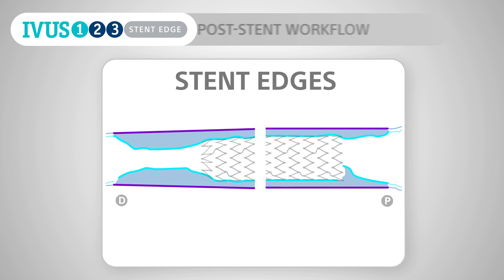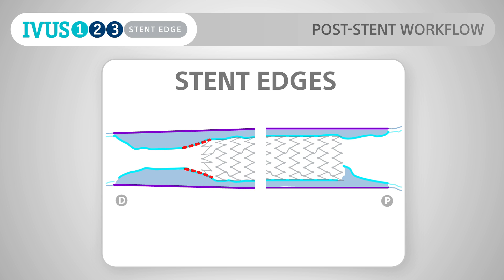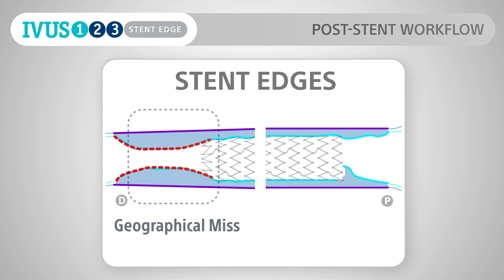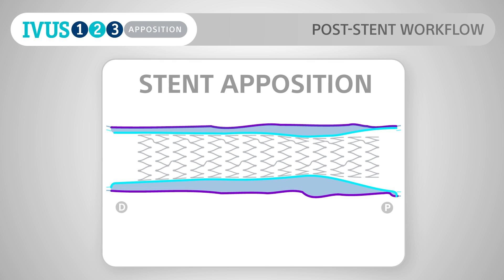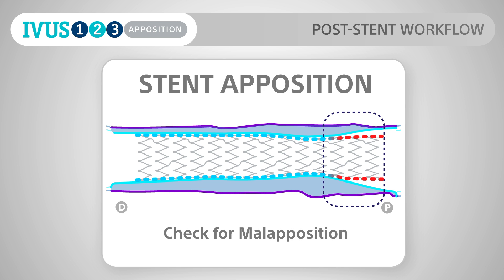Stent edges — geographical miss: see if the stent missed the lesion and check if the stent caused any edge dissection. Stent apposition: ensure no malapposition along the entire length.